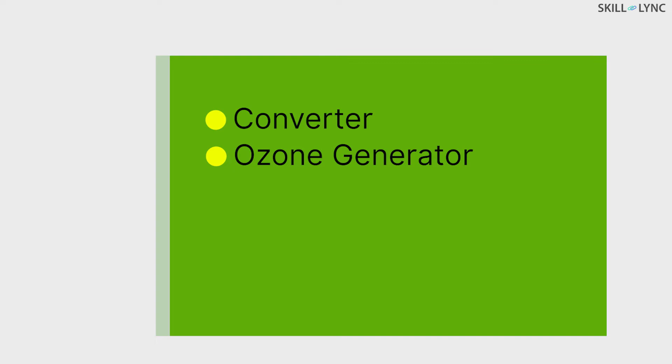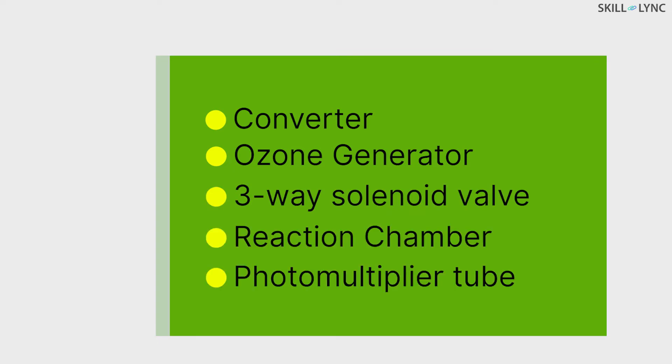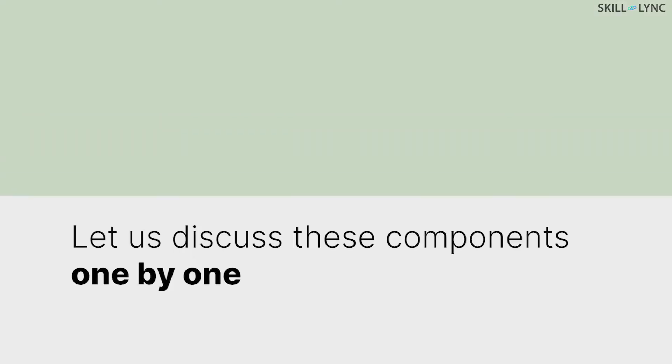When it comes to construction, a chemiluminescence analyzer consists of a converter, an ozone generator, a three-way solenoid valve, a reaction chamber, and a photomultiplier tube. Let's discuss these components one by one.